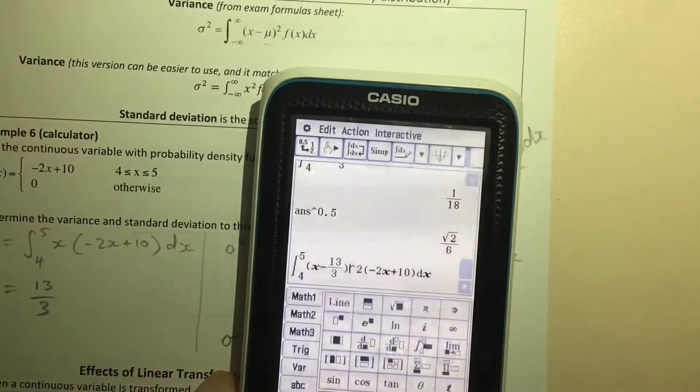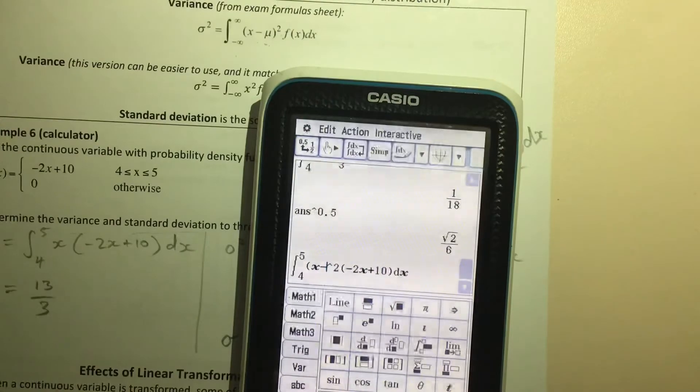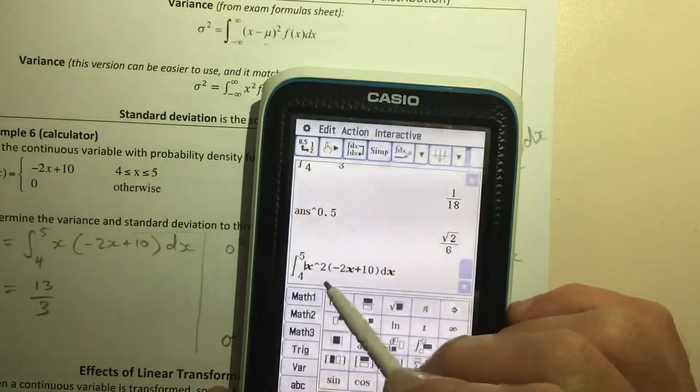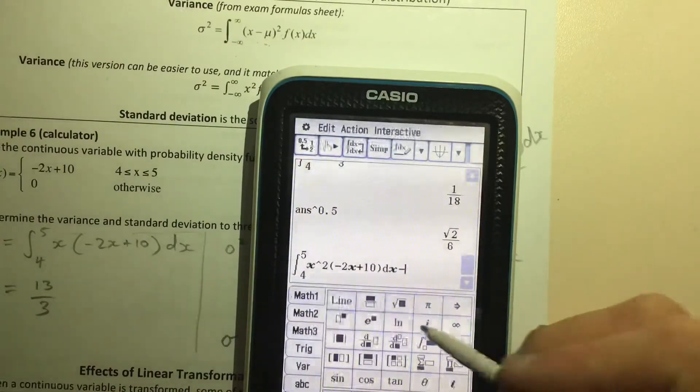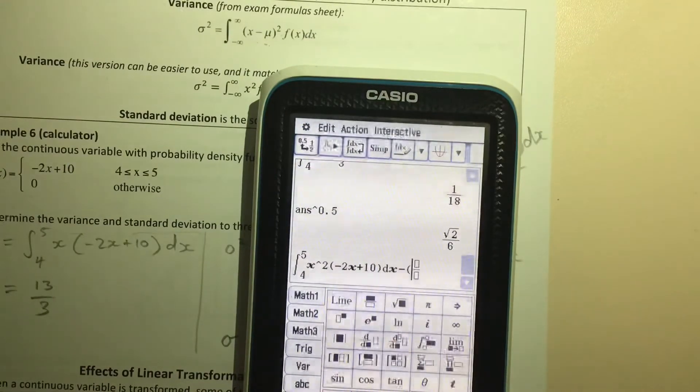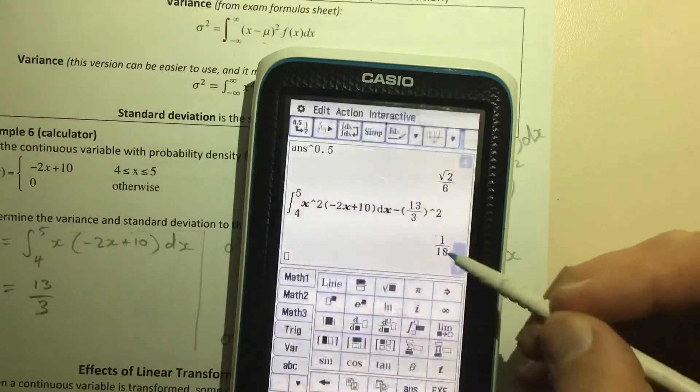and instead of having the expected value in there with x, we just put x² at the front, so the integral of x² times the function, and then outside of the integral, you put minus (13/3)². We get the same value that we got before for the variance, so either one of those,